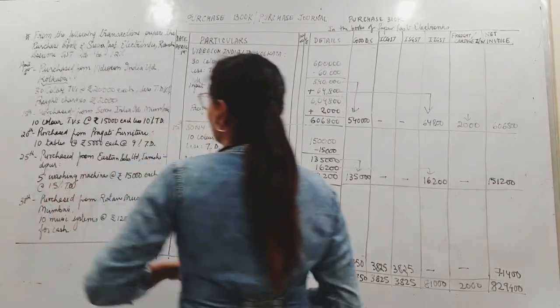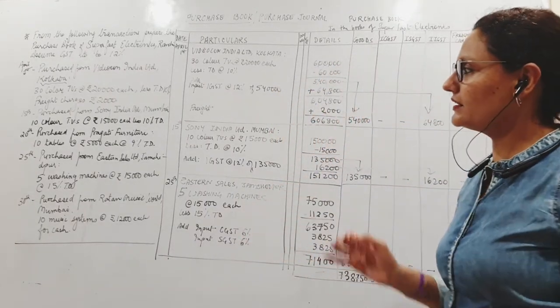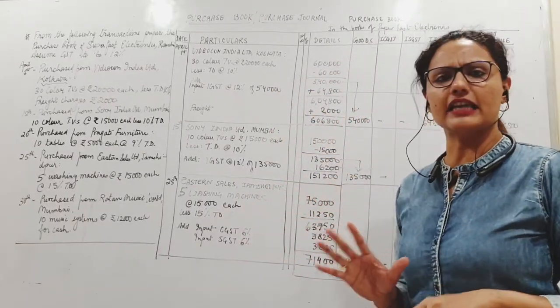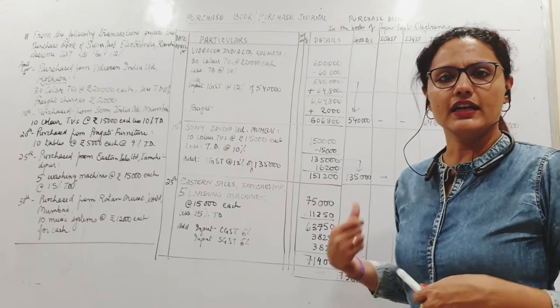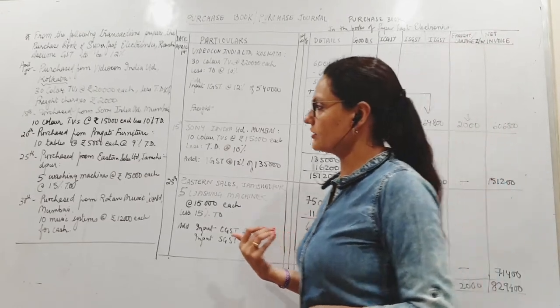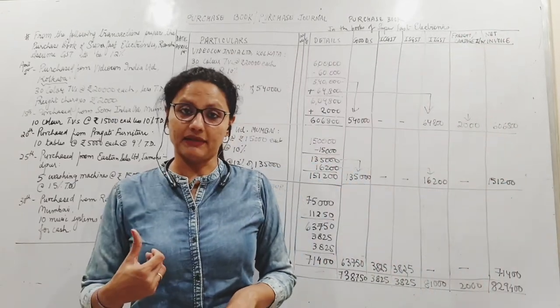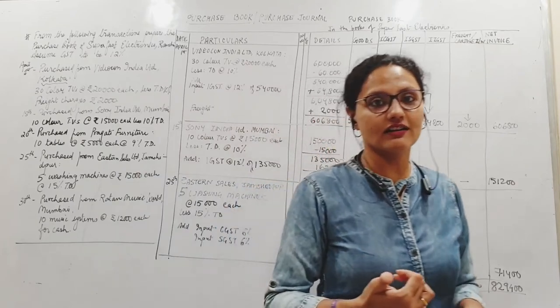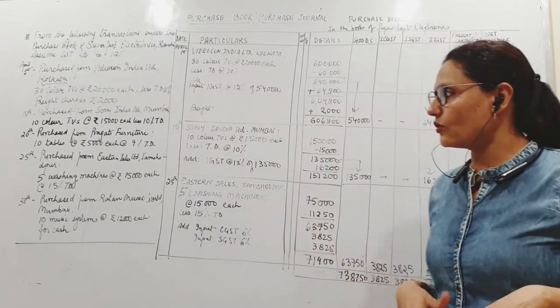Then IGST 12 percent of 1,45,000, and it comes to this amount. No freight here, so therefore my total bill value is this.